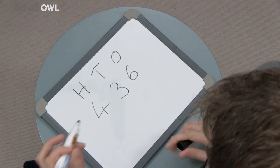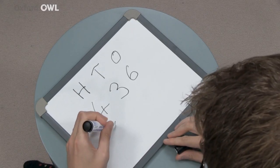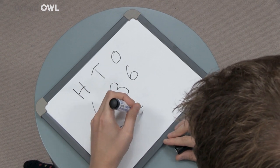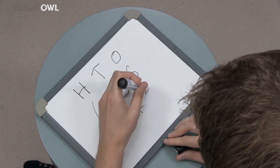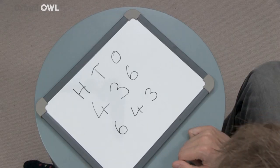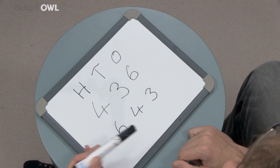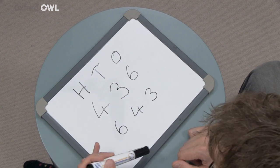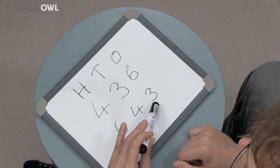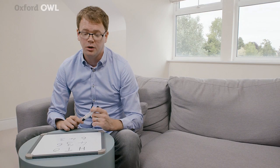If we swap the digits in the number around to form the number 643, the digit 6 now has a value of 600 because it's in the hundreds place. The digit 4 has a value of 40 because it's in the tens place. And the digit 3 has a value of 3 because it's in the ones place.